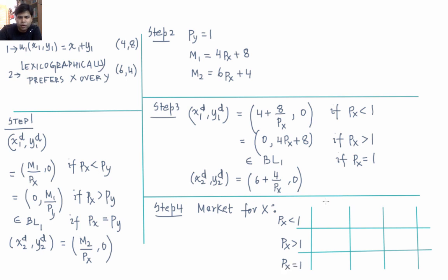When px < 1, aggregate demand for x is individual 1's demand plus individual 2's demand, giving 10 + 12/px. The supply of x is 6 + 4 = 10. Clearly, no matter what value of px less than 1 we choose, demand for x will always exceed supply. So there is no equilibrium price of x less than 1.